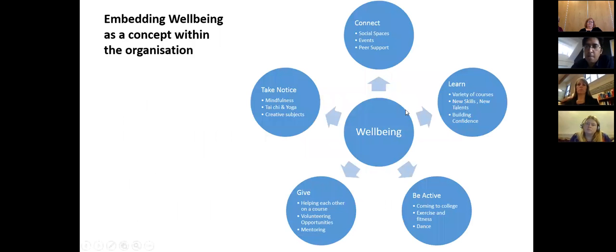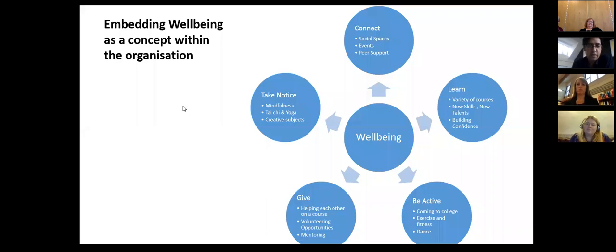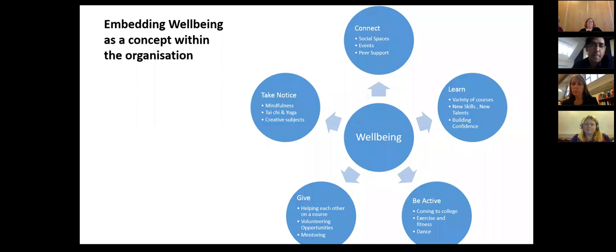A diagram illustrates how the Five Ways to Well-being — using the acronym CLANG — has been embedded into the college space. 'Connect' relates to social spaces where learners hang out, talk and meet, which also supports peer support and informal friendships. Staff and learners share the same café area. The college is diverse, including international learners from different backgrounds and learners with LDD, all sharing the same spaces.